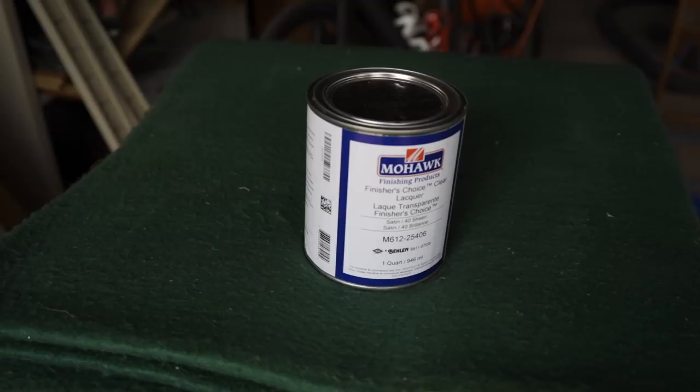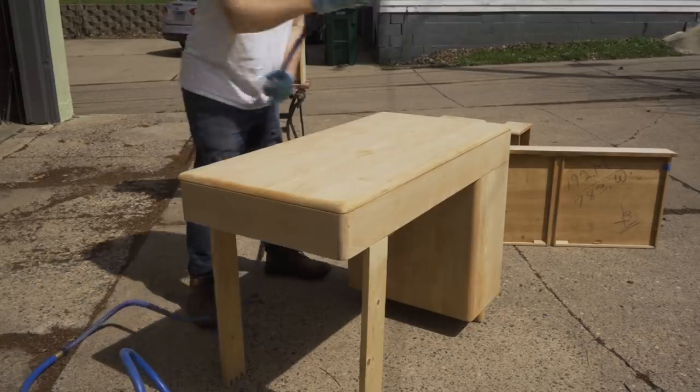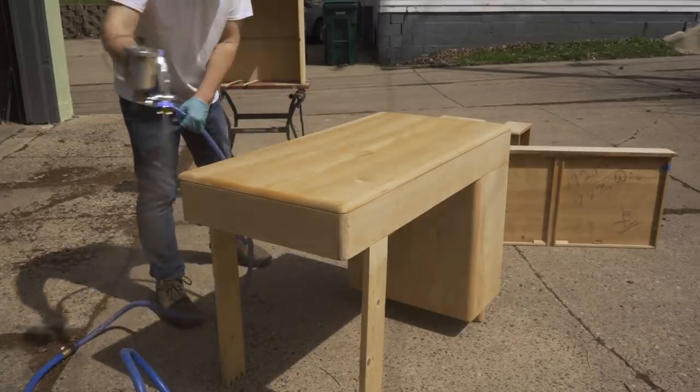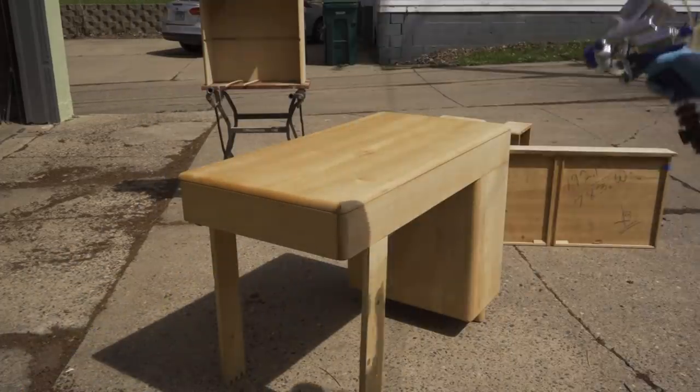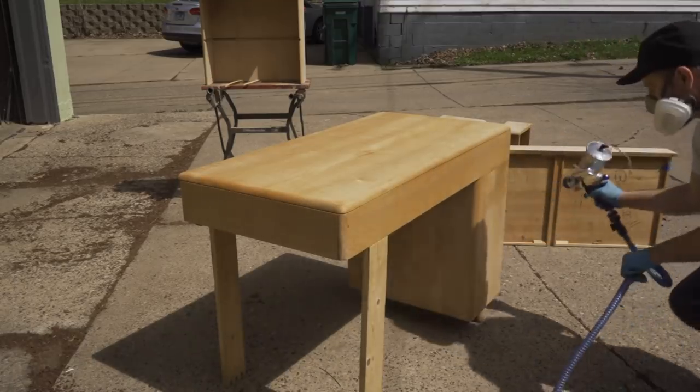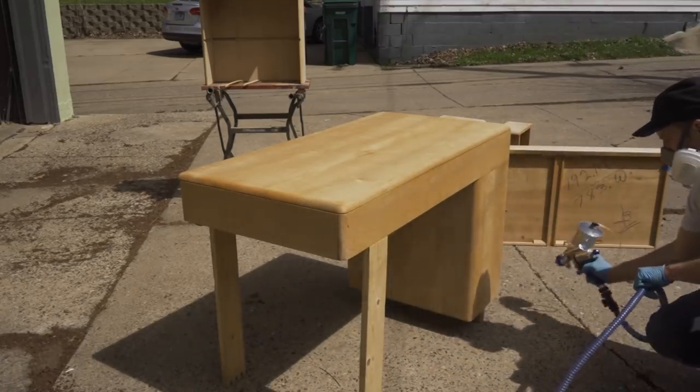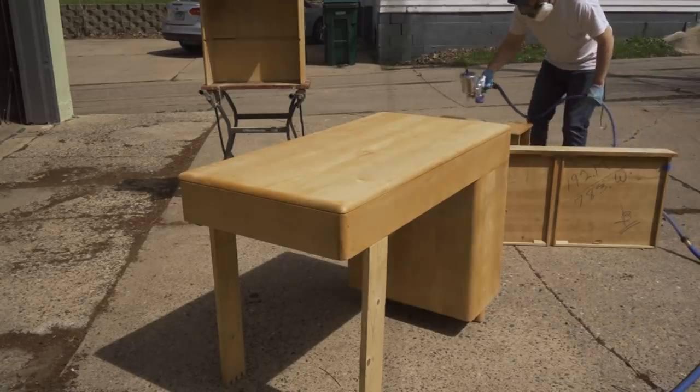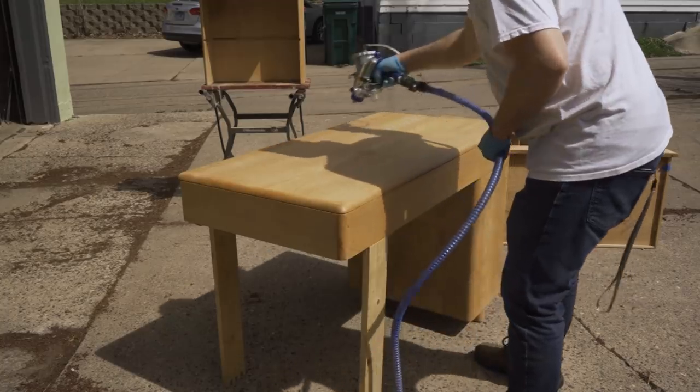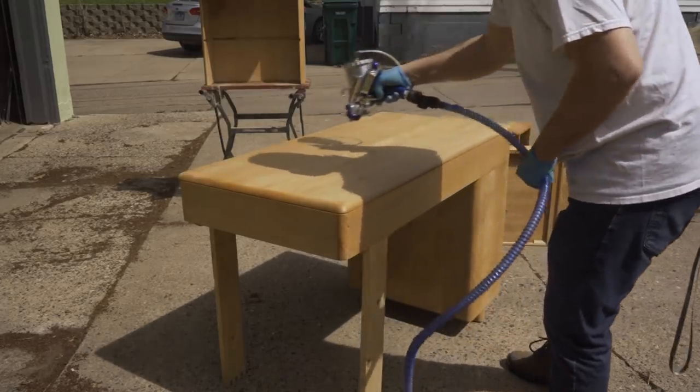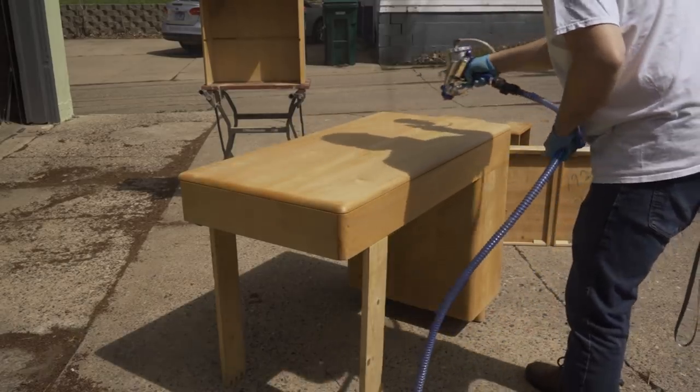It's still going to be clear, you'll still be able to see the wood, but it's not going to get absorbed into the grain like the Danish oil is. So it won't accentuate the grain as much. It will have a little more of an understated look. To apply the lacquer, I got out the spray gun, although you could do it with aerosol cans. I don't remember exactly how many coats I put on, but probably three or four.